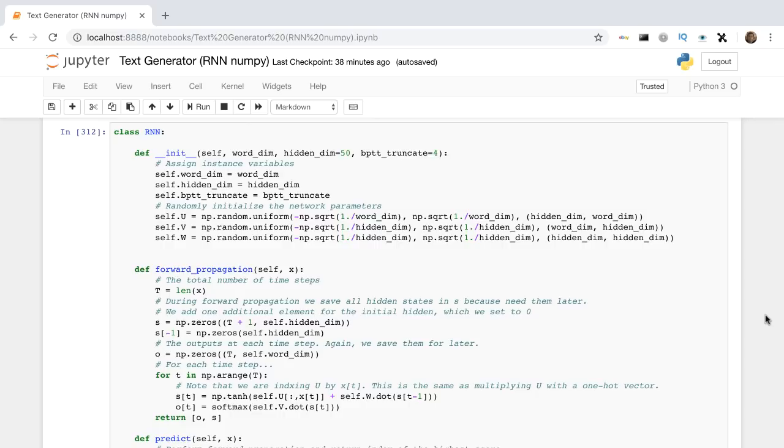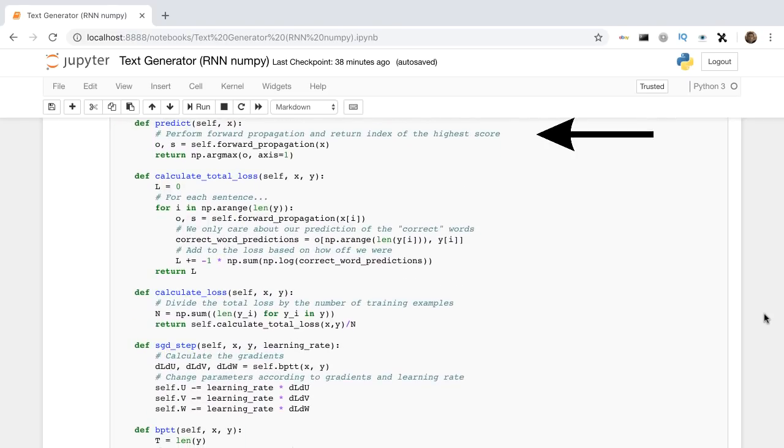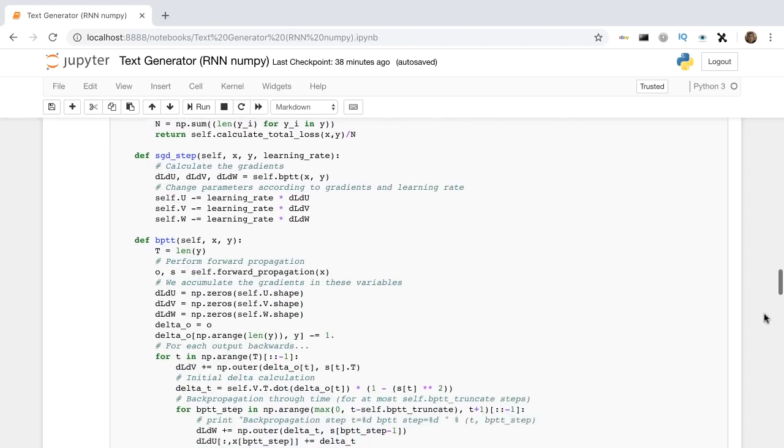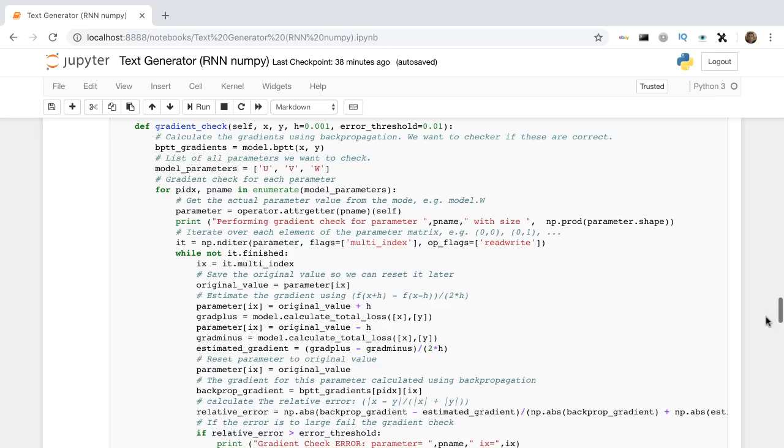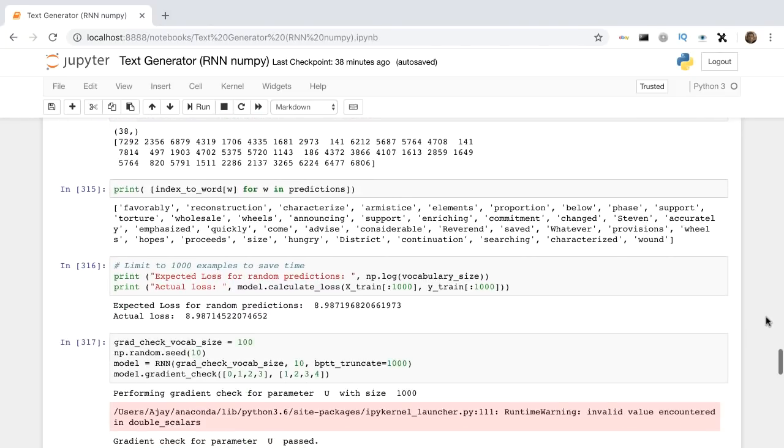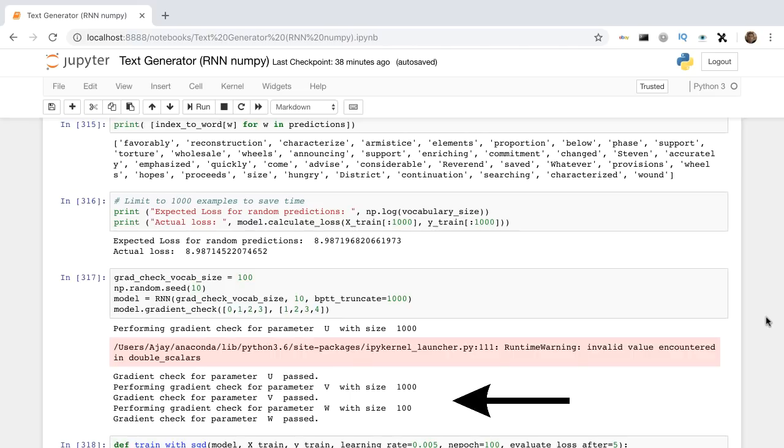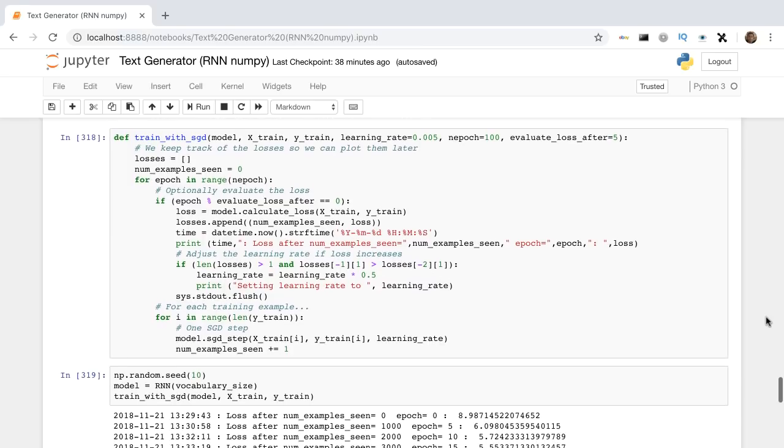The forward method computes and stores the state and output activations of every time step. They are stored for the backprop step. The prediction function will output the word with the highest probability of occurrence. SGD step performs the gradient update through the backpropagation through time algorithm. Gradient checking will determine if our hand-implemented optimizer is actually doing what it should be doing. It's good to include it for manually coded optimizers. Once we see our optimizer is working as expected, we can begin training our model with stochastic gradient descent, decreasing our learning rate if the loss starts increasing.